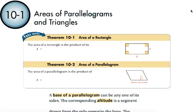We'll start off this lesson with some familiar formulas. The first theorem is the area of a rectangle theorem. You already know that the area of a rectangle is the product of its base and its height, where we label the base B and the height H.